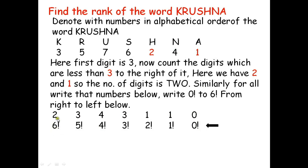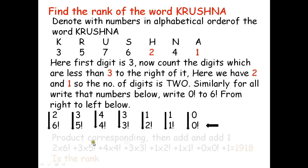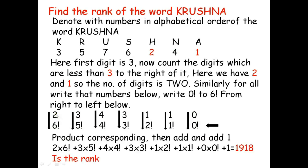Now take the product of the corresponding digits and add these products: 2×6! + 3×5! + 4×4! + 3×3! + 1×2! + 1×1! + 0×0!. Then add 1 to this sum, and we get 1918. This is the rank of the word KRISHNA.